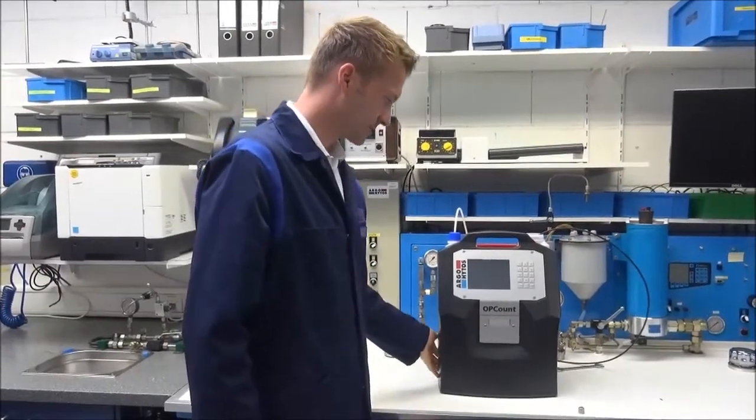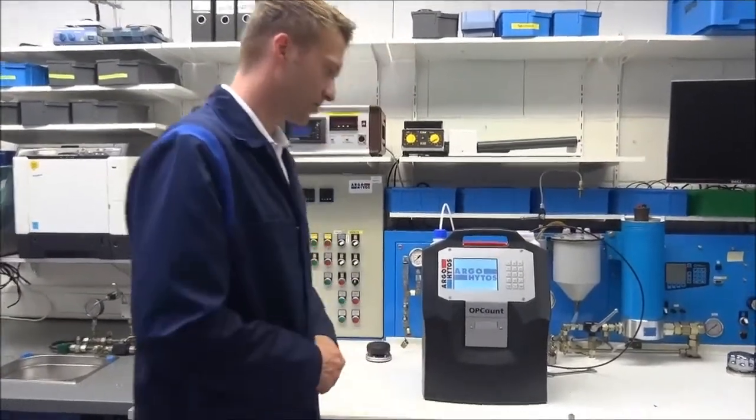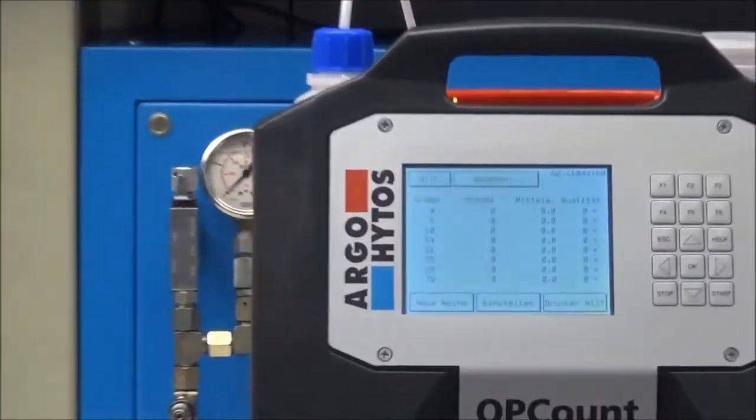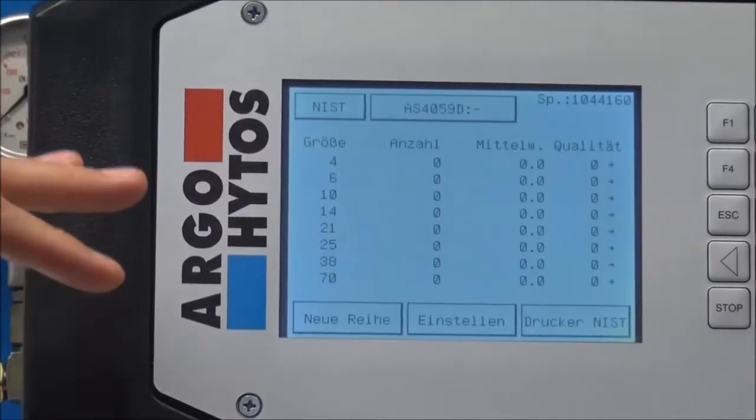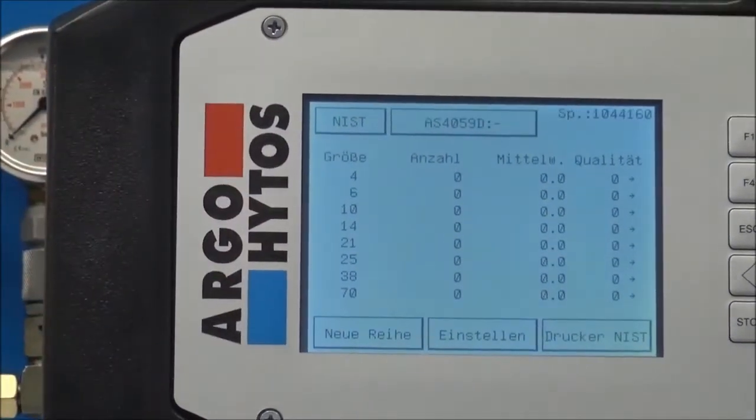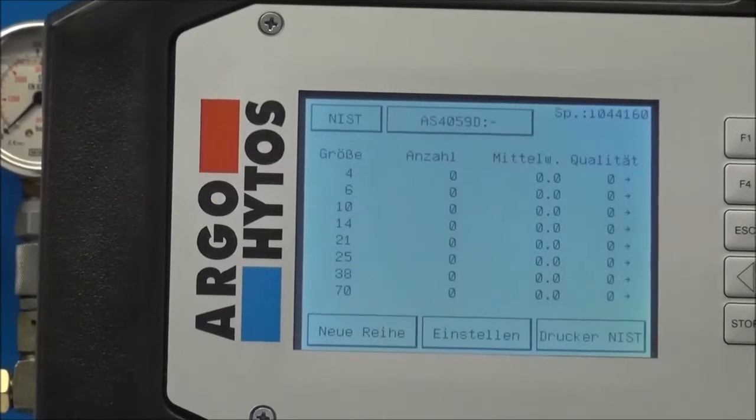First of all we start the unit by pushing the on-off button and after a very short time it is ready for operation. You see the start screen and on the start screen you see directly the concentration and also the measurement in particles and the standard that is chosen.